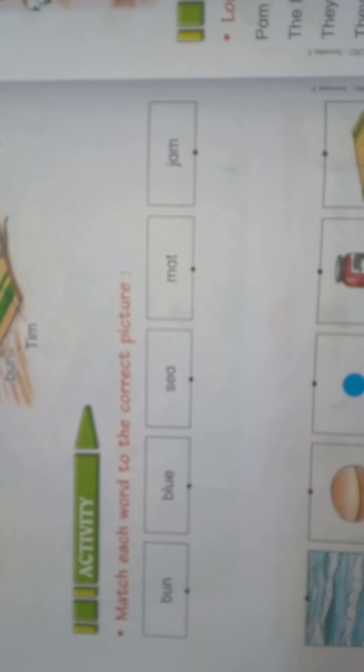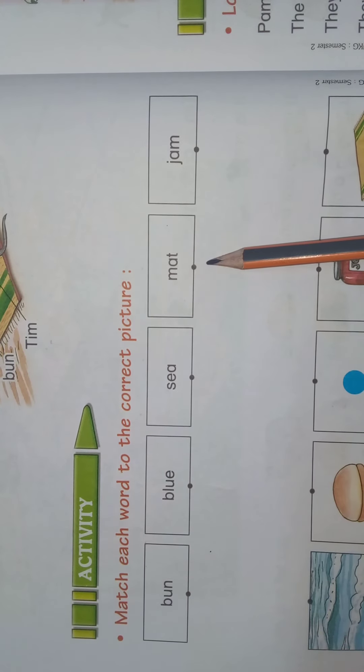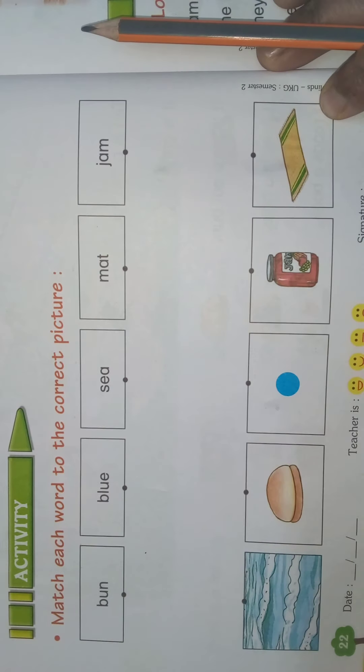Now, children, we will see the activity. See here, what is the activity they have given? Match each word to the correct picture. We should match each word to the correct picture. The words given are: B-U-N bun, B-L-U-E blue, S-E-A sea, M-A-T mat, J-A-M jam.